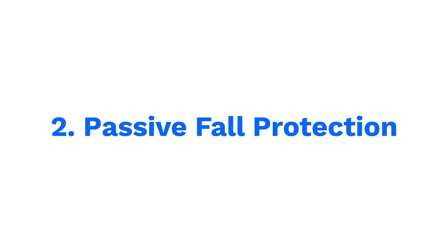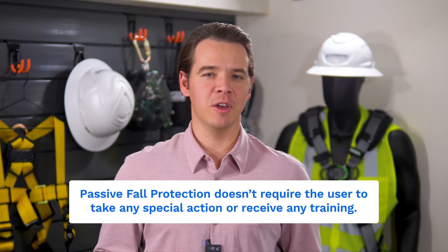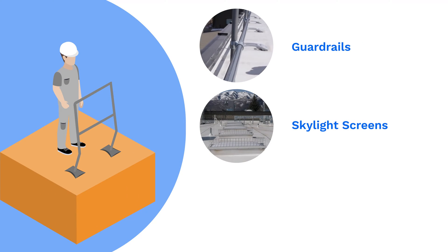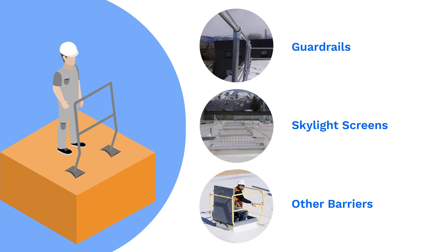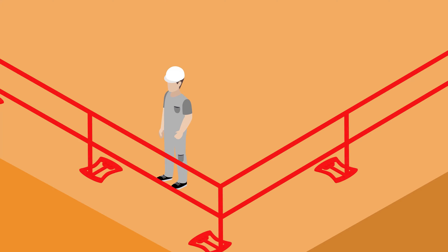Sometimes hazard elimination isn't realistic, so the next best option is passive fall protection — protection that doesn't require the user to take any special action or receive any training. Guardrails, skylight screens, and other barriers are examples of passive fall protection; they create a physical barrier between the worker and the fall hazard, providing direct protection without the direct involvement of a worker. These are the reasons passive fall protection sits at number two on the hierarchy.